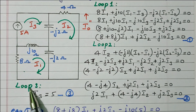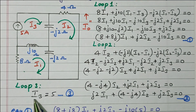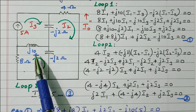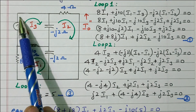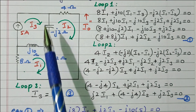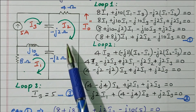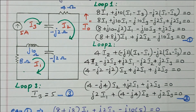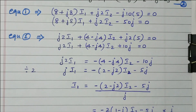For loop 3, a 5 ampere current source is present, so directly I3 = 5. Our aim is to find I2, so we substitute I3 = 5 into the equations. From Equation 2, simplified and divided by 2, we express I1 in terms of I2.